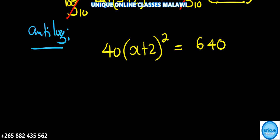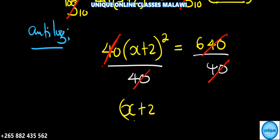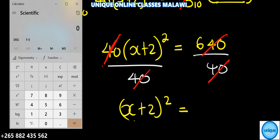Now we are going to remove that 40. We are going to divide both sides by 40. So this 40 and that 40 will cancel. Then (x+2)² equals 640 divided by 40, which is 16.